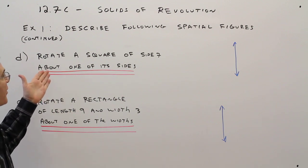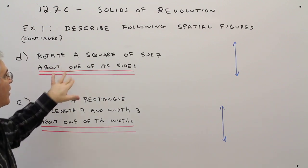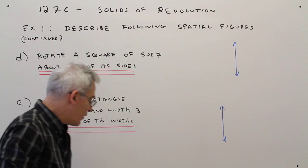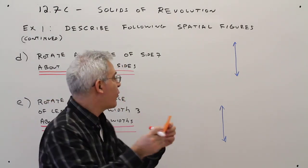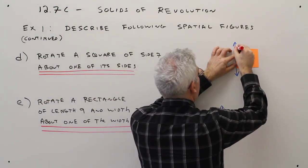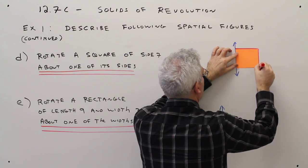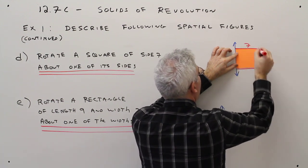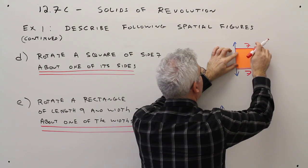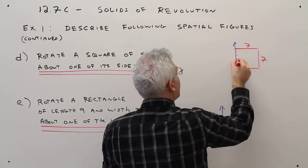Part D, rotate a square of side 7 about one of its sides. So here I've just got a cut out of a square. So we'll just say 7, 7, 7, and this is also 7.